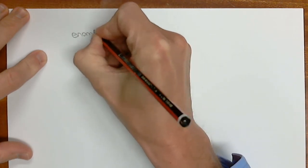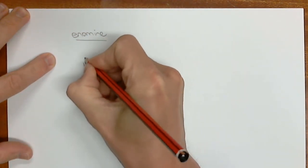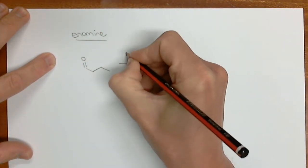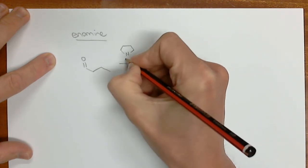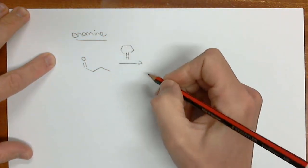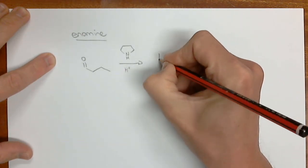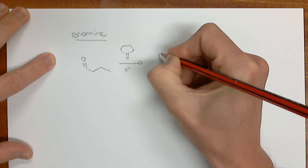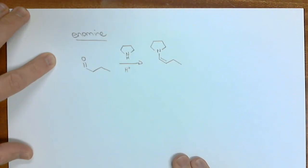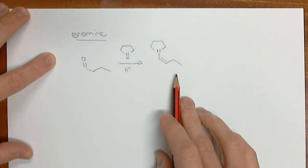You would have done this already. For example, we can take that same aldehyde butanal and treat it with a cyclic amine, pyrrolidine, with a little bit of acid. You should have done the mechanism by now, and the product looks like this. This is the enamine, alkene plus the amine. You must be able to do this mechanism.